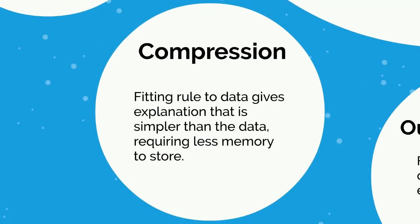Once we have that rule extracted, we can use the classification algorithm for compression. Storing all the data — all the heads, tails, and when they occurred — is computationally intensive and requires a lot of memory, especially with large datasets. However, if we fit a rule to the data, we can explain it more simply and that is easier to store on our computer. As a result, classification algorithms can also be used for compression.